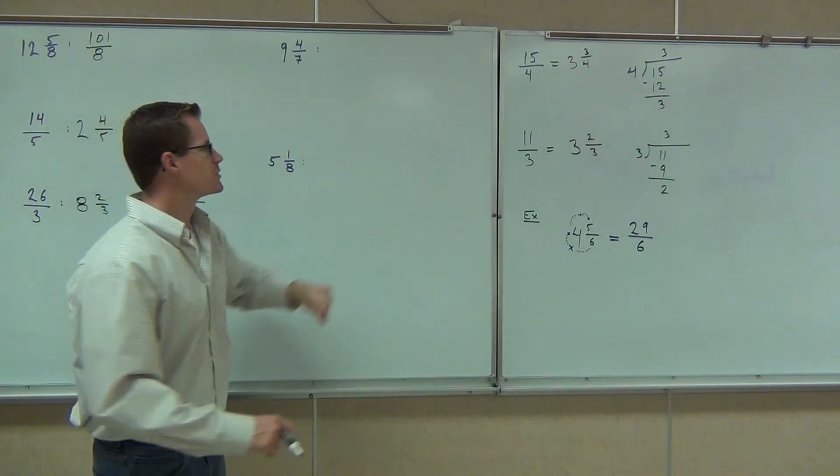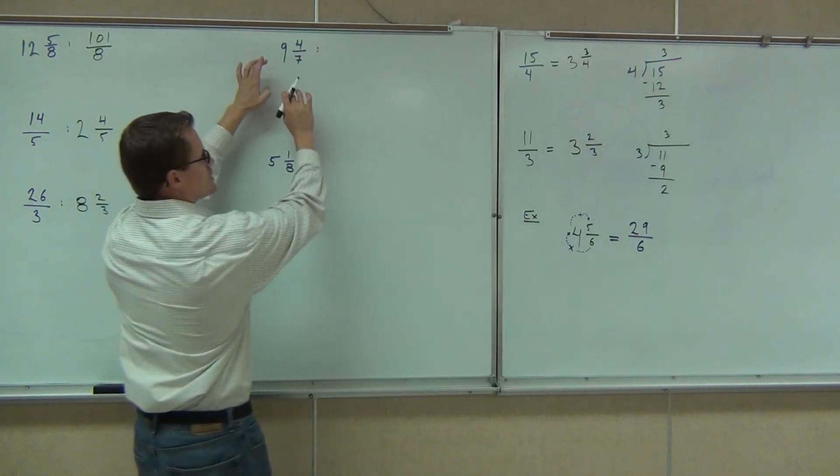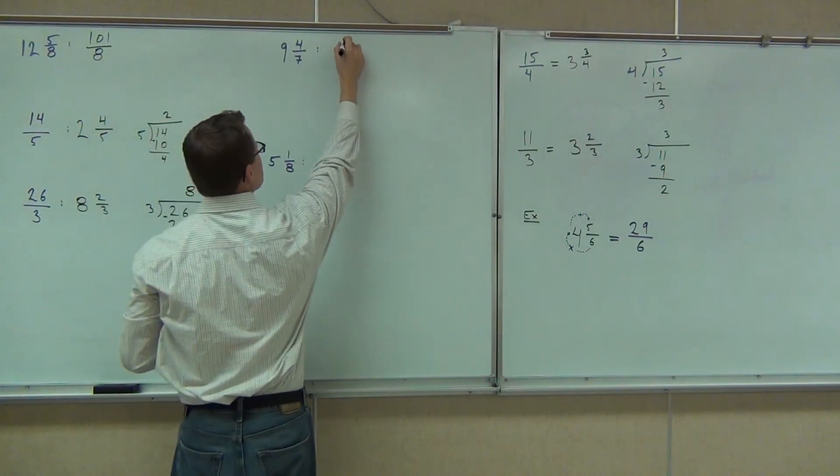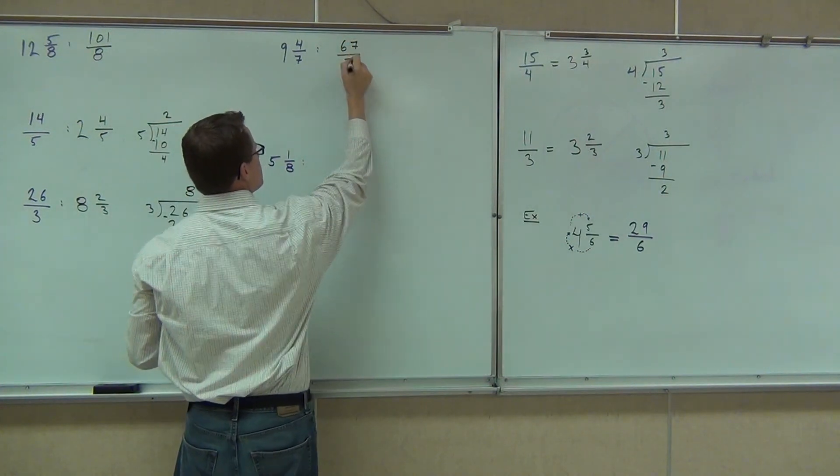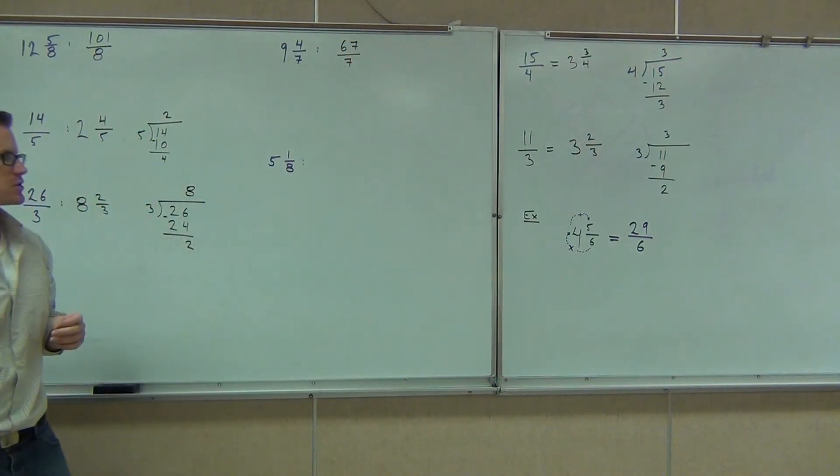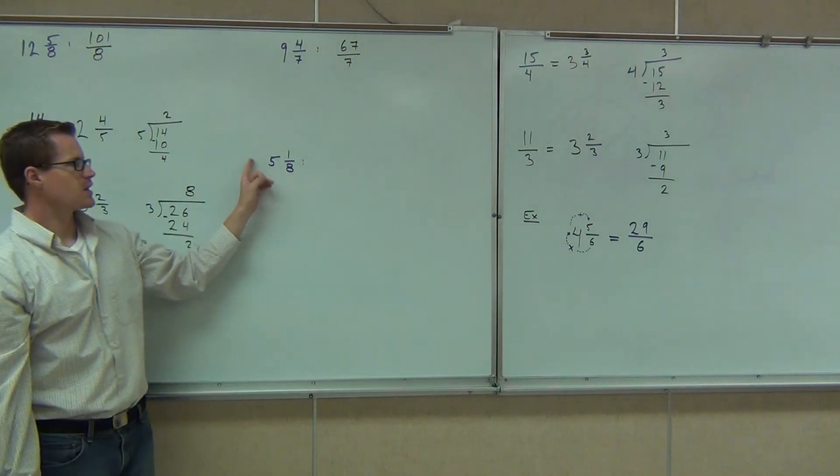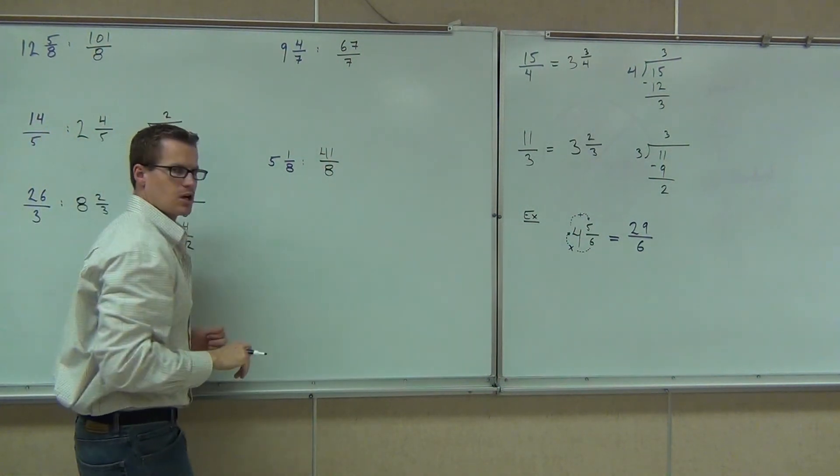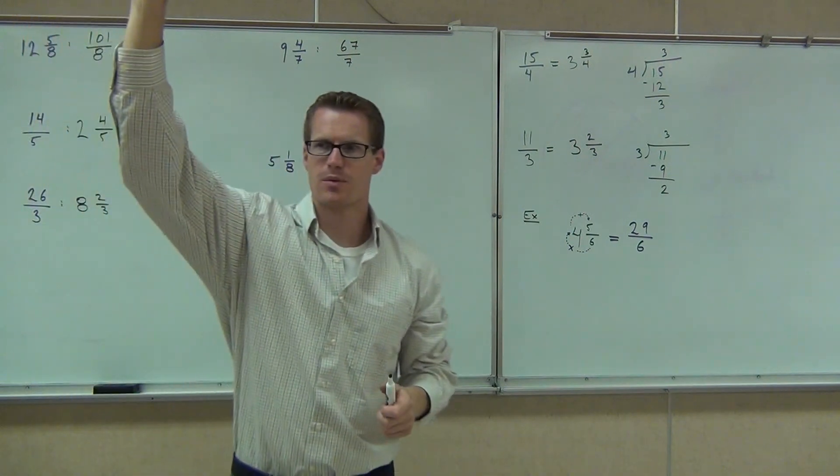We're changing those into impropers, so we're going to multiply, we'll get 63, we'll add 4, we'll get 67. The denominator does not change. Next up, we'll do our 5 times 8, that's 40, we'll add 1, we get 41 over 8.